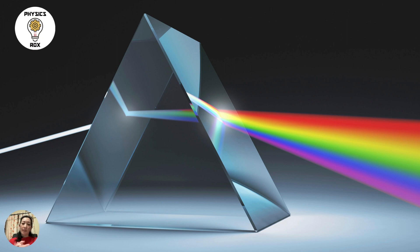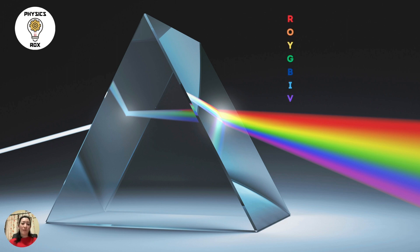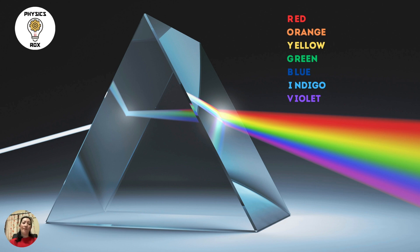If you have your own method, please use it. The method I'd like to share is the ROYGBIV method — literally ROYGBIV. It is essentially the colours of the rainbow in order: red, orange, yellow, green, blue, indigo, violet. If you haven't memorised it yet, you've got to memorise it and know the colours in sequence.